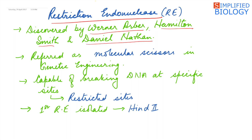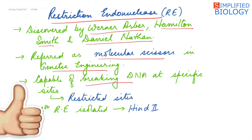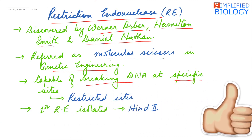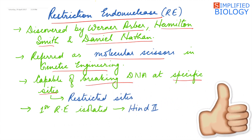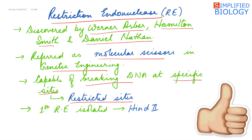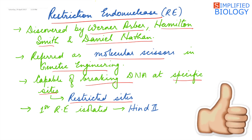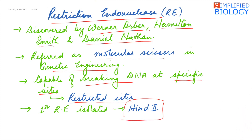They are referred to as molecular scissors in genetic engineering, as they are capable of breaking DNA. They break DNA at specific sites that are referred to as restriction sites. The first restriction endonuclease that was isolated is HindII.